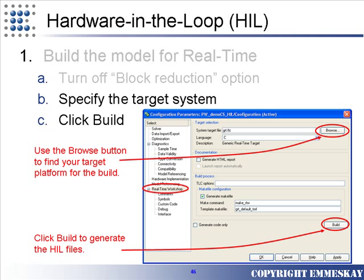Next, we go to the real-time workshop settings and select the target file of interest. The target file is specific to the hardware vendor that you've selected for your real-time platform. Once you've selected that target, click Build and it will generate the HIL files.